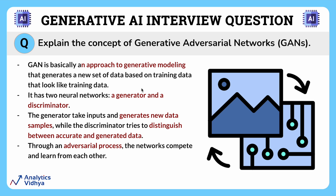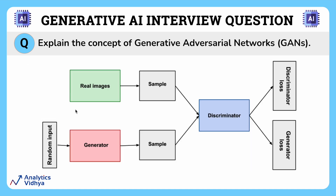It involves training two neural networks: a generator and a discriminator. The generator network takes a random input and generates samples — such as images, text, or audio — that are very close to the training data it was trained on. The goal of the generator is to produce samples that are almost identical to real data.